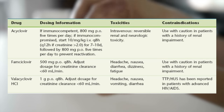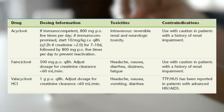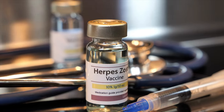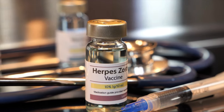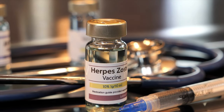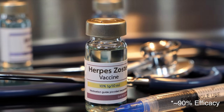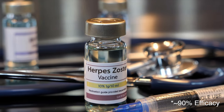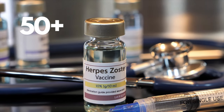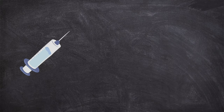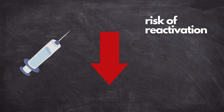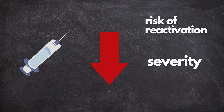Antiviral medications are often prescribed to help speed up the healing process and alleviate the pain. One of the best ways to prevent herpes zoster is through vaccination. The shingles vaccine, typically a two-dose series, is recommended for individuals aged 50 and older. Vaccination can reduce the risk of developing shingles, and if shingles does occur, it can help lessen the severity and duration of the illness.